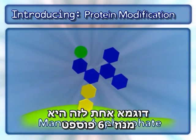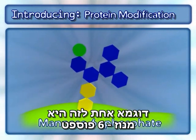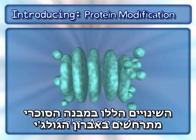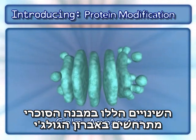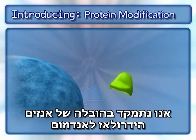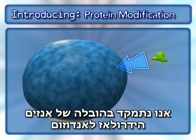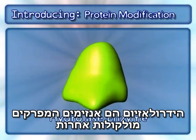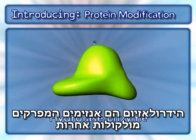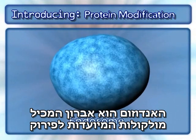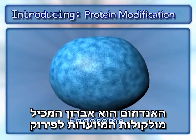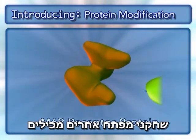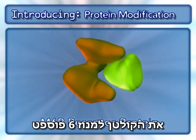One example of this is mannose-6-phosphate. These sugar side-chain modifications occur within the Golgi apparatus. We focus here on the delivery of a hydrolase enzyme to the endosome. Hydrolases are enzymes that degrade other molecules. The endosome is an organelle that contains molecules to be degraded. Other key components include the M6P receptor protein.